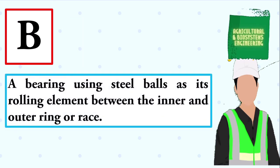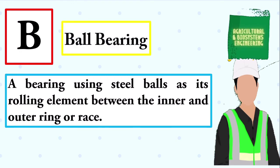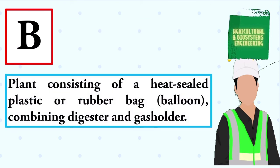A bearing using steel balls as its rolling element between the inner and outer ring or race. The answer is: ball bearing. Plant consisting of a heat-sealed plastic or rubber bag or balloon, combining digester and gas holder. The answer is: balloon type.